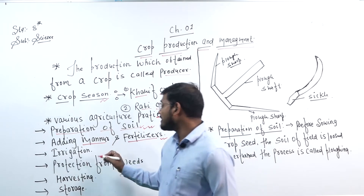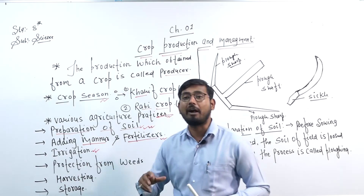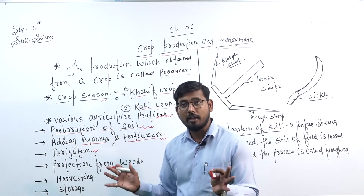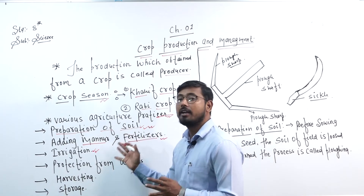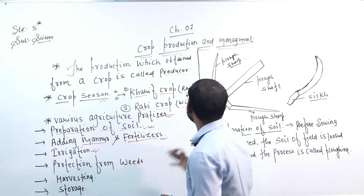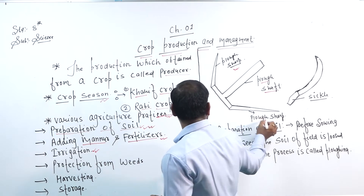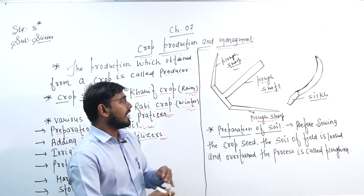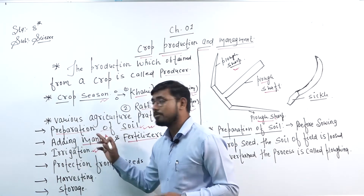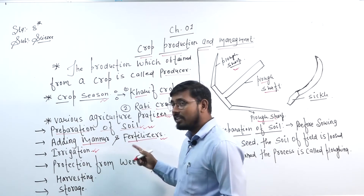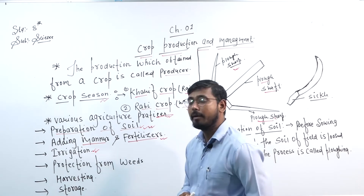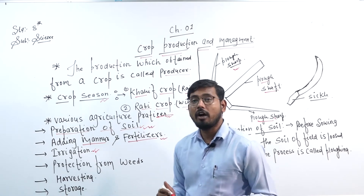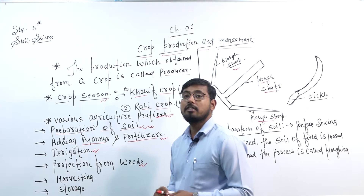The third step is irrigation, which is very important. After that, the fourth step is protection from weeds. Irrigation involves providing water to the crops, and protection from weeds involves removing unwanted plants.